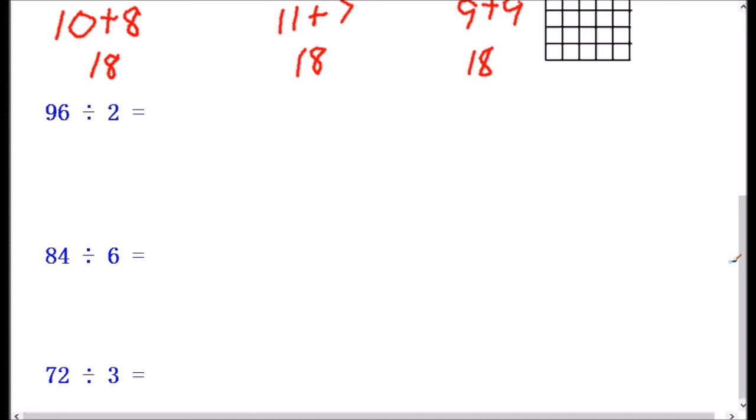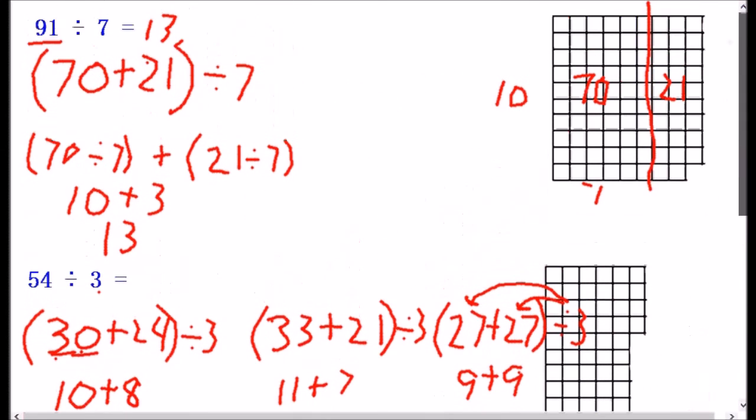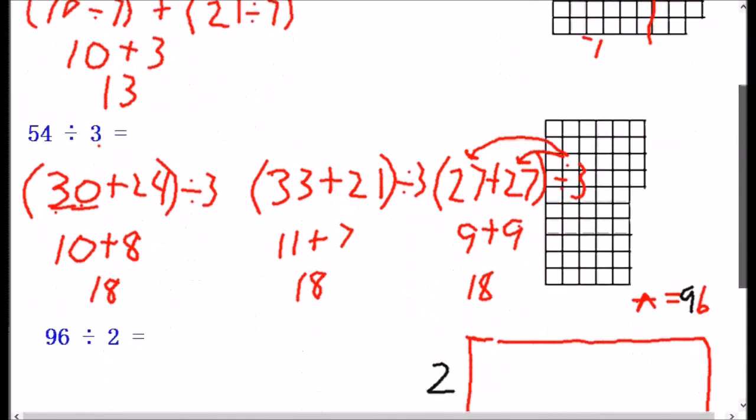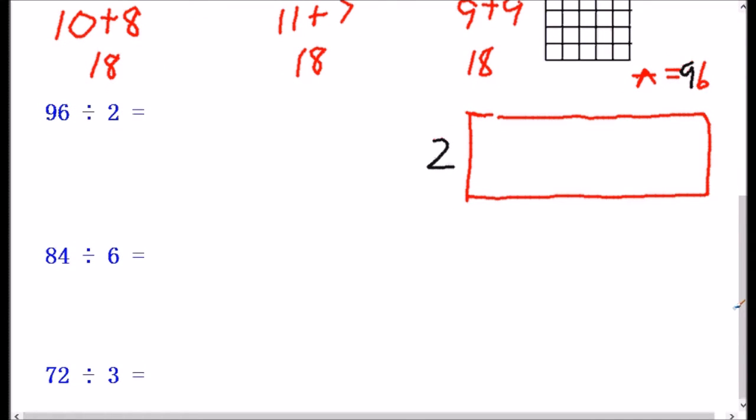So let's do the next one. And this one we're going to do without the base 10 blocks. We're going to use what's called an area model. Area is length times width. We know we have a length of 2. We don't know the width, but we know the area of this rectangle needs to be 96. So the area, the total number of rectangles, just like up here, see how 70 and 21 still made this 91. So it's kind of the same idea. We're just not actually drawing out 96 squares because that would take a long time.